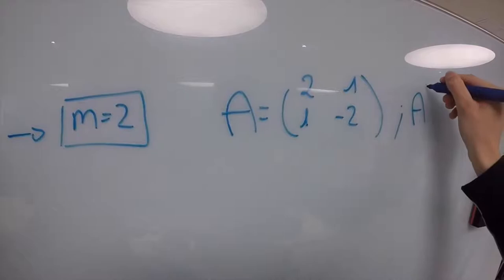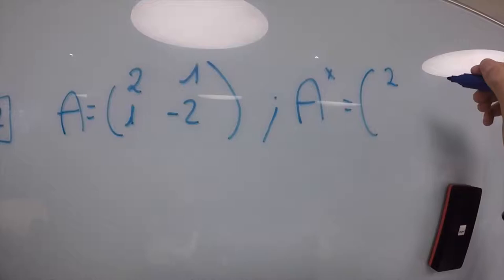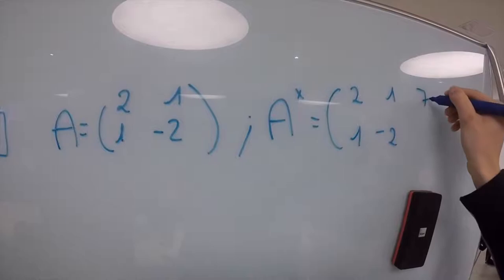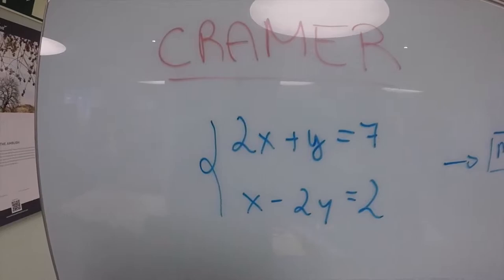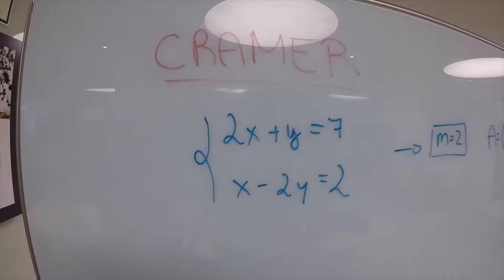Now we're going to do the amplified matrix. Our amplified matrix is 2, 1, 1, minus 2 and 7 and 2. These are the matrices, the amplified matrix you obtain from these two equations.